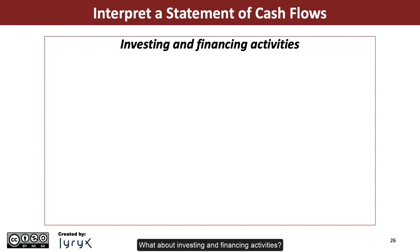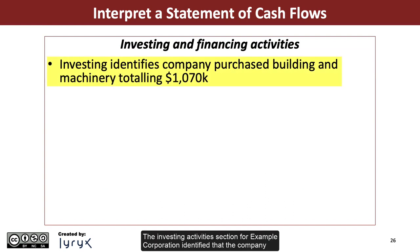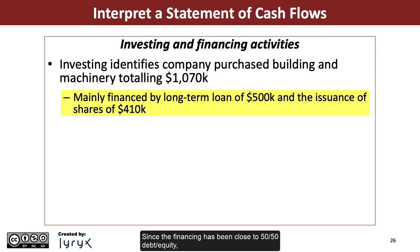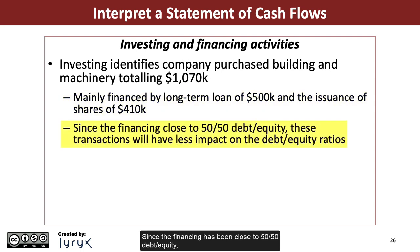What about investing and financing activities? The investing activities section for example corporation identified that the company purchased a building and machinery totaling $1,070,000 this reporting period. These have been mainly financed by a long-term loan of $500,000 and the issuance of shares of $410,000. Since the financing has been close to 50-50 debt equity, these transactions will have less impact on the debt equity ratios.